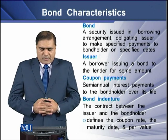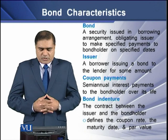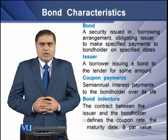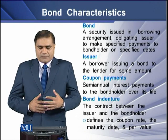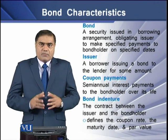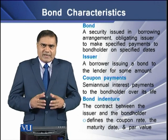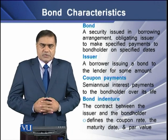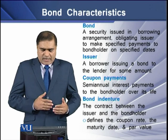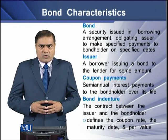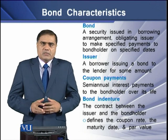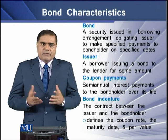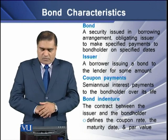Coupon payments are the semi-annual interest payments made to the bond holder over the entire life of the bond. A bond indenture is a contract between the issuer and the bond holder, and it defines the coupon rate, maturity date, and par value of the bond.